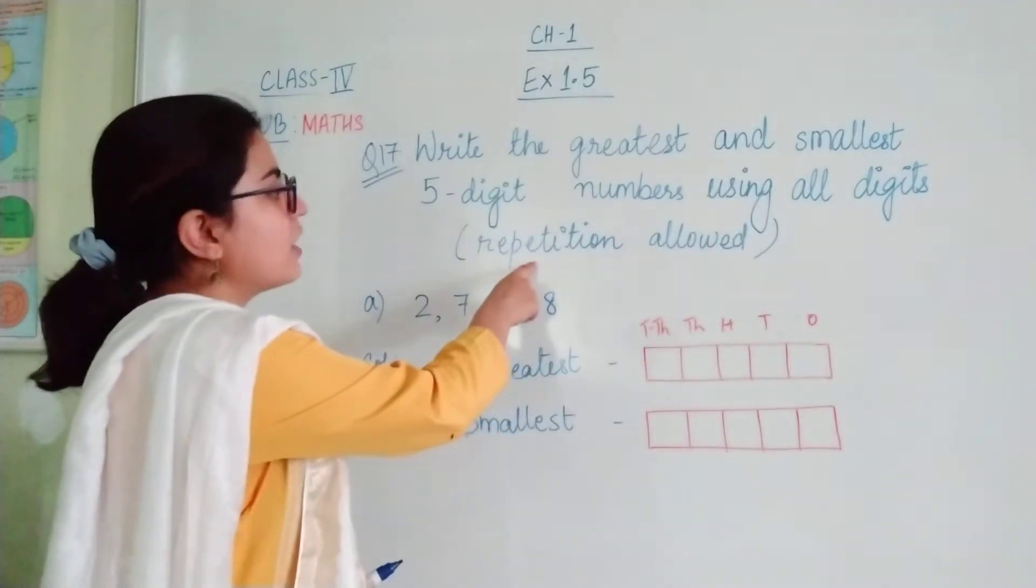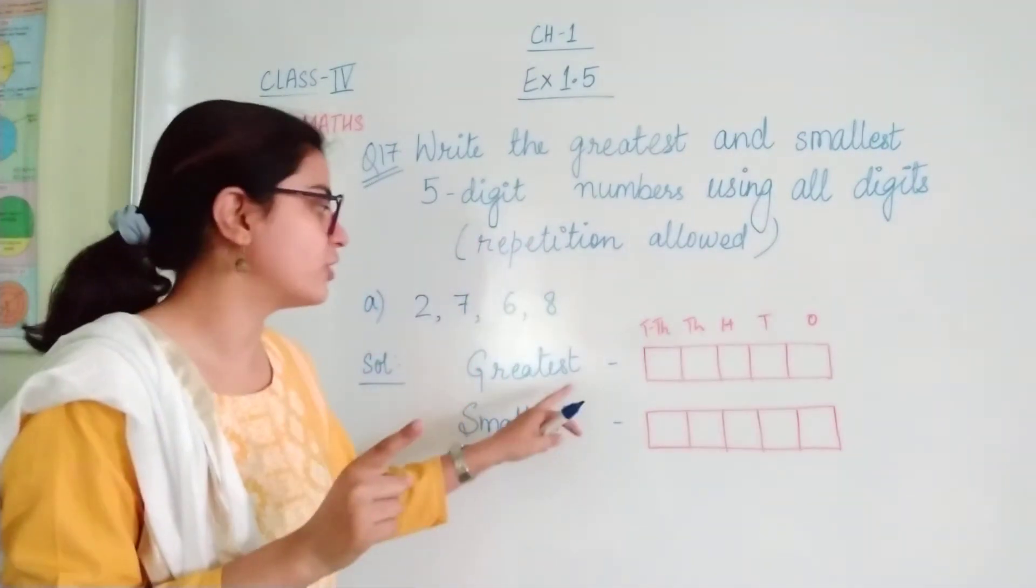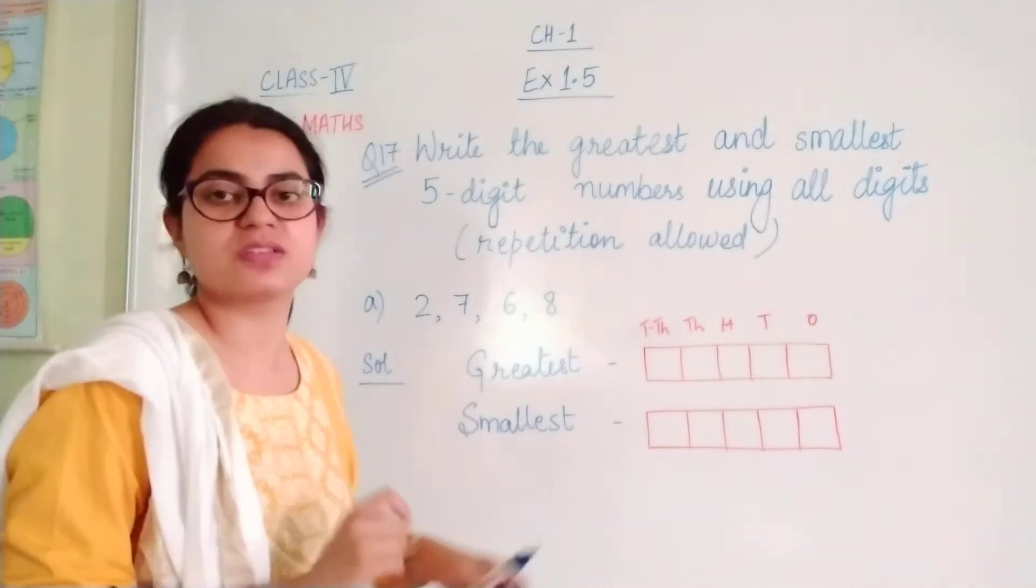But when we are allowed to repeat, what do we do? We repeat the greatest number for the greatest and the smallest number for the smallest. Understood?